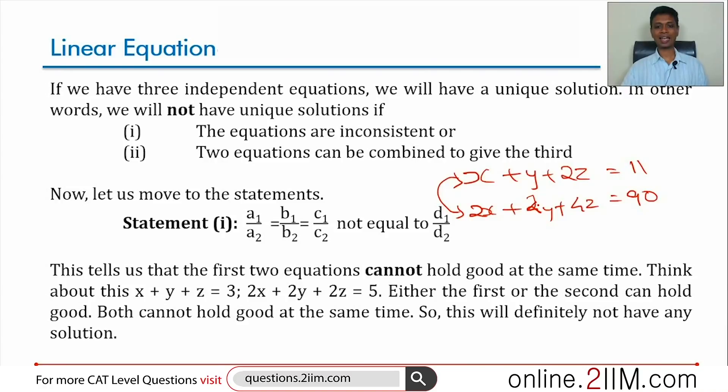This is inconsistent. This system cannot have a solution. x, y and z together cannot have values. This is out. Now, let us go to statement 2.